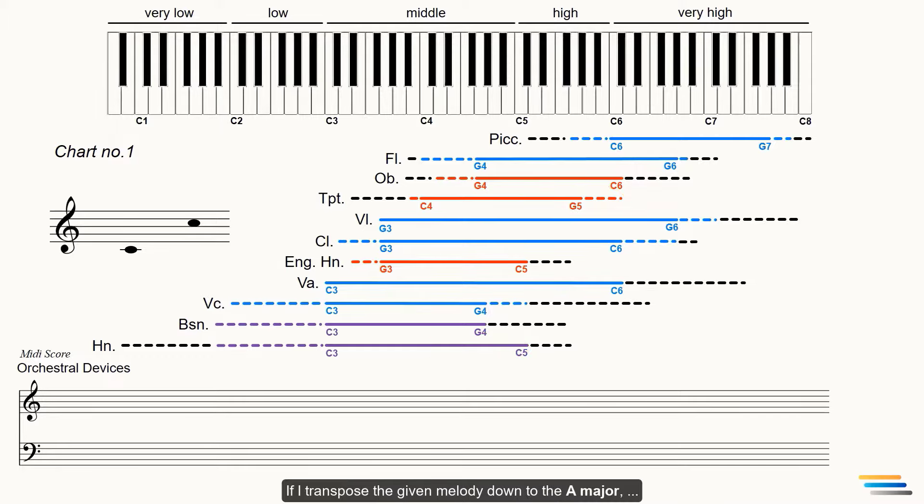If I transpose the given melody down to the A major, then the boundary will be A3 and A4. Now, look here. Both horns and trumpets are on their best of best registers as I avoided using the top limits by transposing the melody down. All instruments will be heard more clearly and brightly.